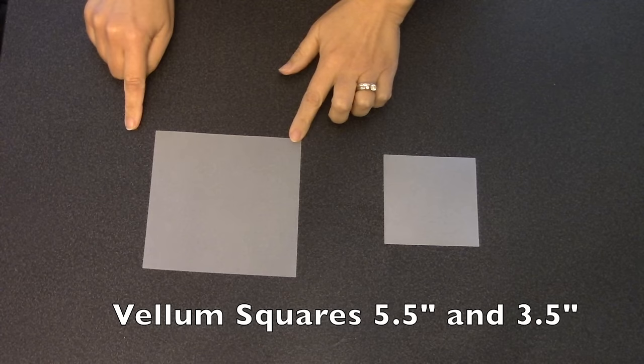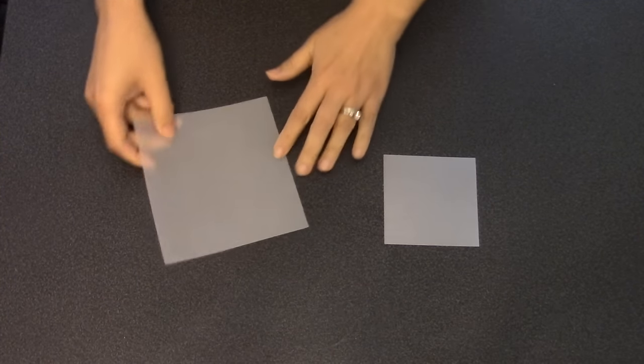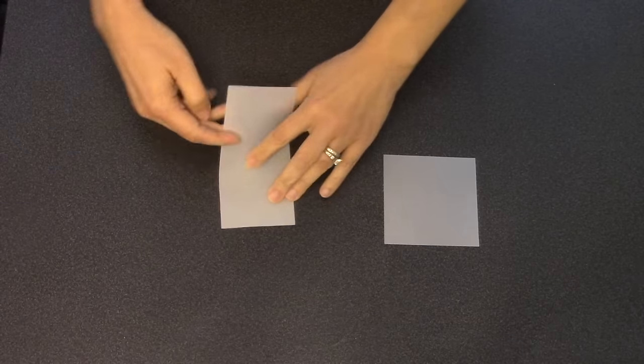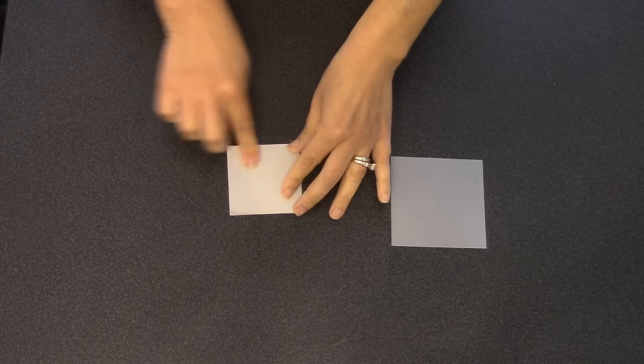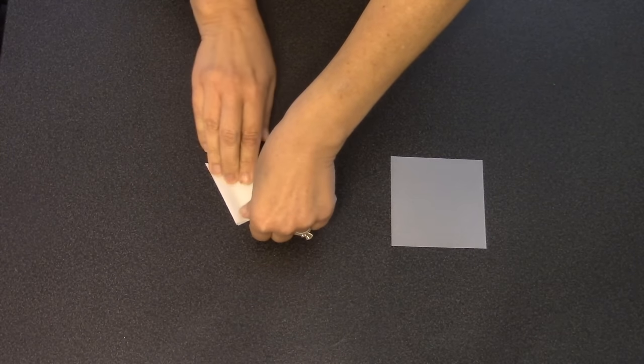I'm starting with squares of vellum, five and a half inch square on the big one, three and a half inch square on the smaller one. To convert this into a spider web I'm first going to fold it in half, then in half again, and then I'll take that square and just fold it in half diagonally.